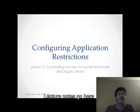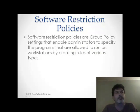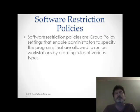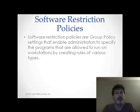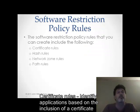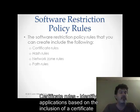Now let's take a look at configuring application restrictions. Application restrictions have actually been around for a long, long time. We used to use them to some degree in Windows XP to help prevent malware. The basic thing to remember about software restriction policies is that they are group policy settings that enable administrators to specify the programs that are going to be allowed to run on workstations by creating rules of various types. Software restriction policies involve creating rules that center around four types: certificates, hashes, network zones, and paths.